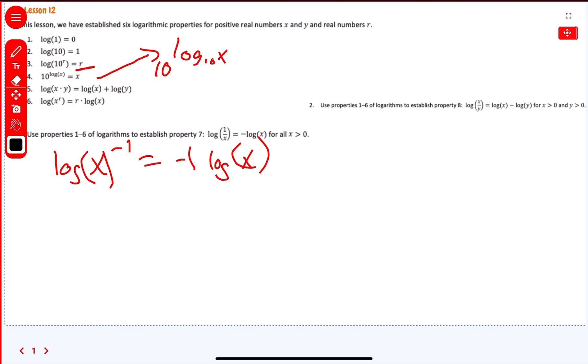Use properties 1 through 6 to establish property 8. Log of x over y is equal to log x minus log y, for when x is greater than 0 and y is greater than 0. Now, how are we going to get that?